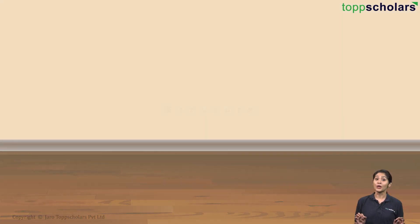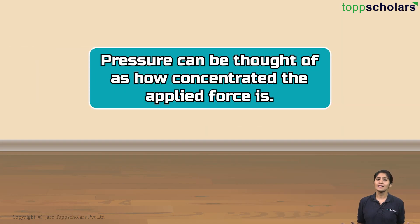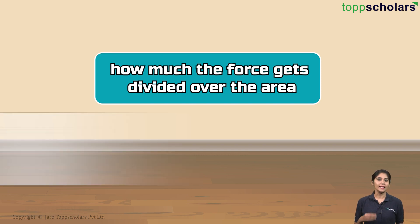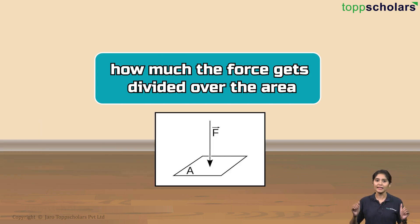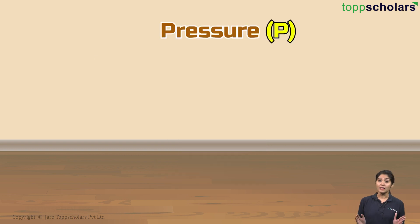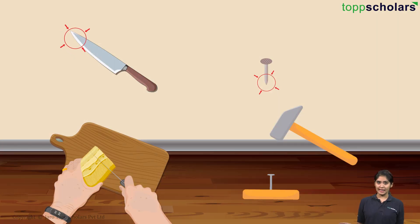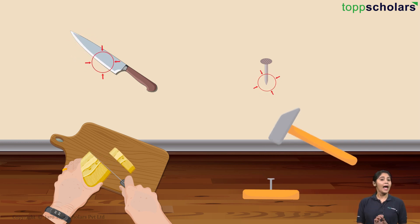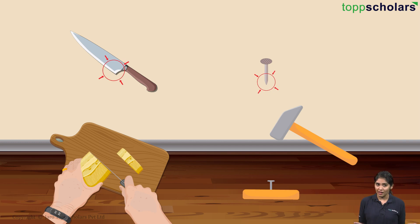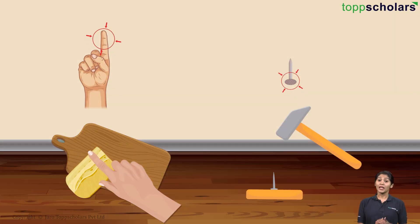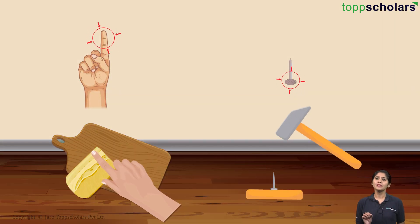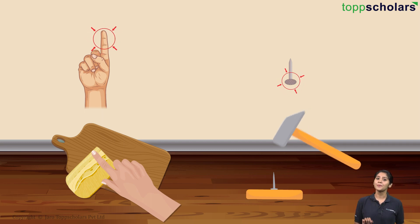And that's what we call pressure. Pressure can be thought of as how concentrated the applied force is. How do we calculate it? Simply by calculating how much the force gets divided over the area. Mathematically, pressure P is calculated as the force divided by the area. So when objects are very sharp, the contact area is minimal, and so the pressure they experience is large — that's why they can cut and puncture through. On the other hand, if the contact area is very large, even though you put the same force, the pressure becomes very small.